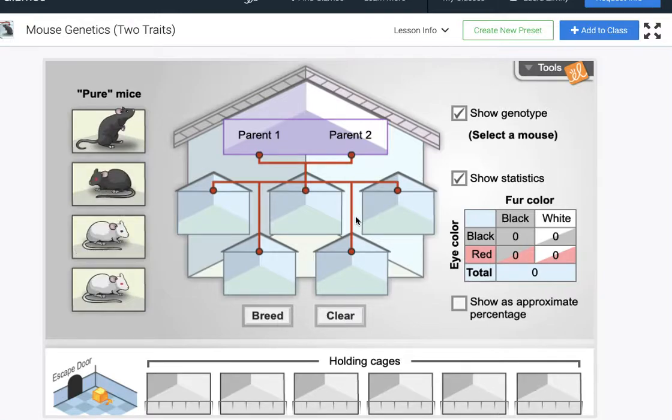So I'm using this really awesome gizmo called Mouse Genetics Two Traits from a website called explorelearning.com. Explorelearning.com has all kinds of awesome simulations in both math and science and they are offering free access to that for a short time here while we are undergoing this COVID-19 situation.